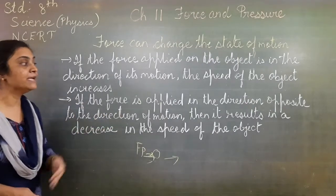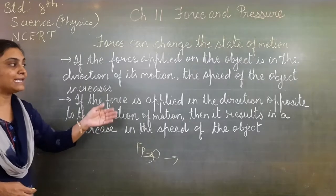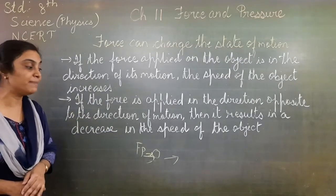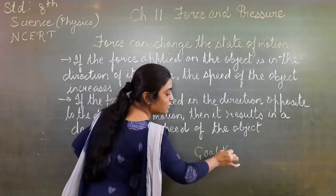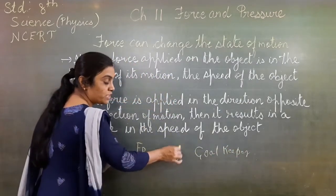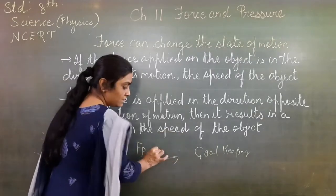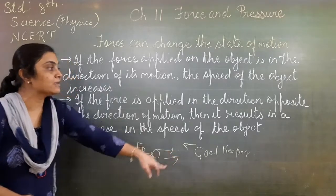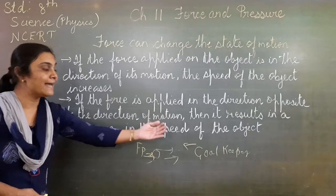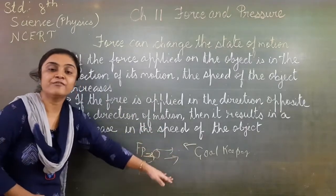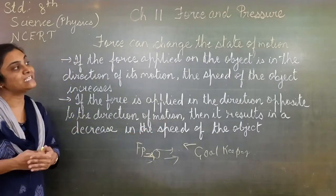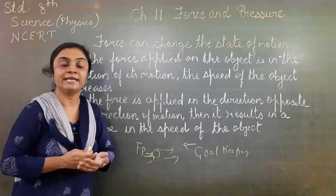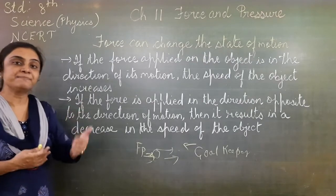If the force is applied in the direction opposite to the direction of motion, it results in a decrease in the speed of the object. If the force applied is in the opposite direction of motion, the speed will decrease. The goalkeeper is saving the goal — when the ball is in motion, he will stop that ball by applying force in the opposite direction. The ball's speed will decrease. So there are two conditions: if force is in the direction of motion, speed increases; if force is in the opposite direction, speed decreases.